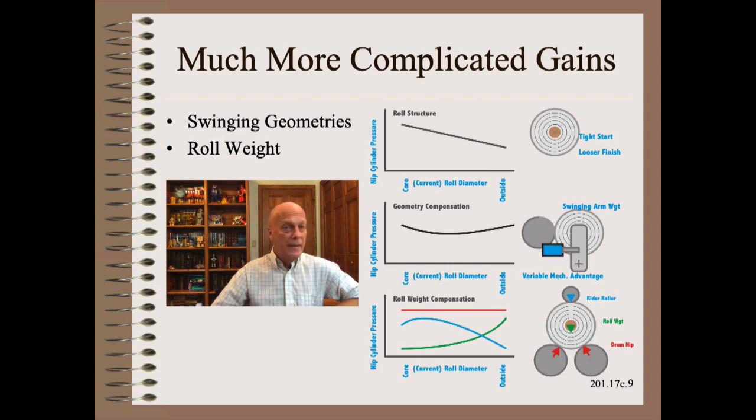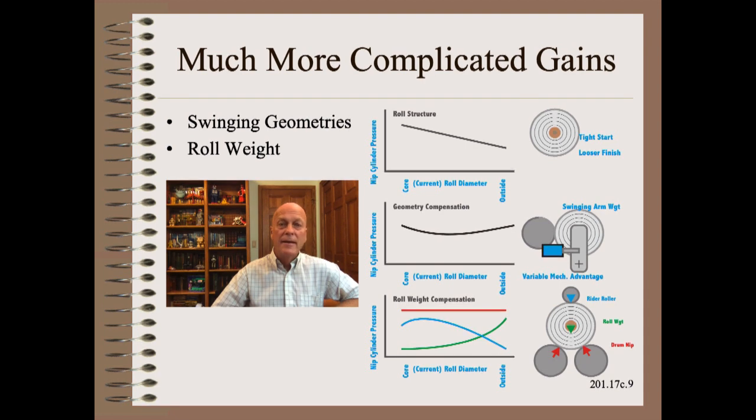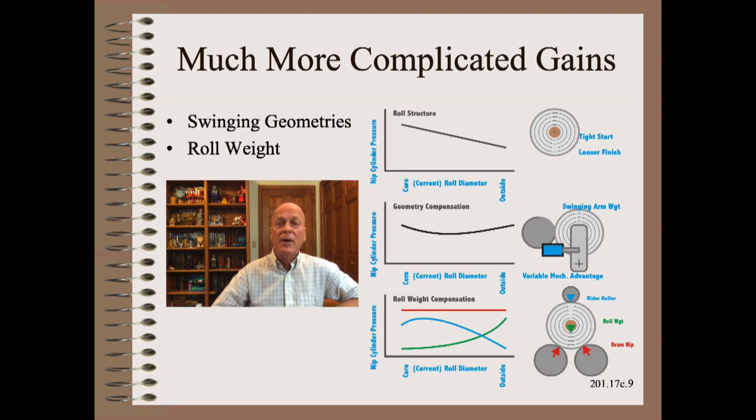So far, gain was easy to calculate because we have only covered direct acting linear systems. However, if a pivot of any type is involved, or if winding roll weight is involved, life gets much, much more complicated. Though, it is still just trigonometry and freshman engineering statics. We will leave it to the design engineer to calculate and check her work. In the field, we may just check the nip at zero and maximum loading.